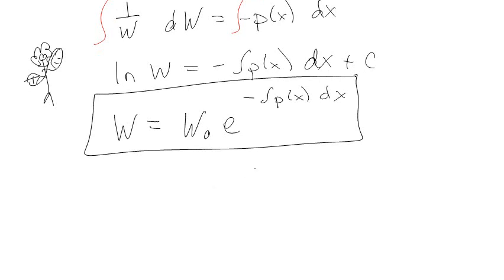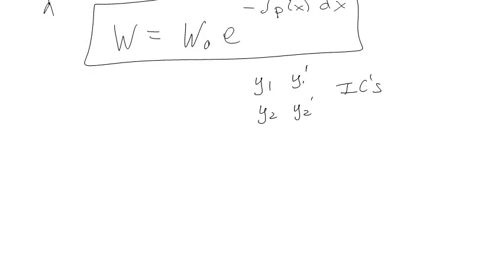If we know an initial condition — specifically initial conditions for Y1, Y1', Y2, and Y2' — then we can calculate the Wronskian from there using the constant C as the initial condition. I'll do another video on actual applications of all this, but this is really cool. Let me show you one more strategy using the same information.